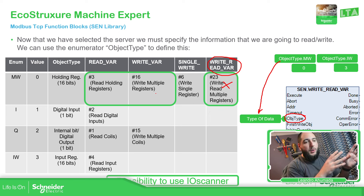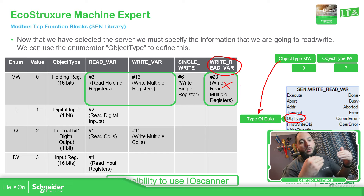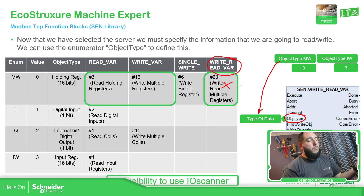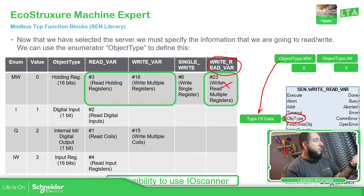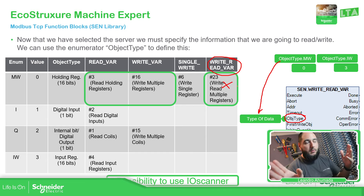Those blocks highlighted in green require you to manage the order of when you're going to communicate with the device, which gives you more programming work. If you want to avoid that and only use those function blocks to communicate to the device, then what you can do is use the I/O scanner, which is the best way to program and configure everything. We'll explain that in another video.